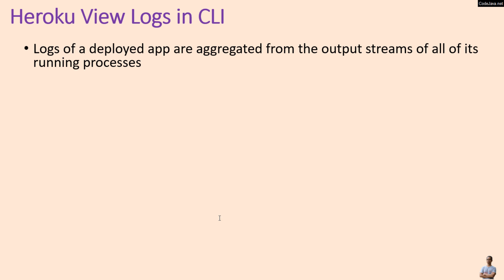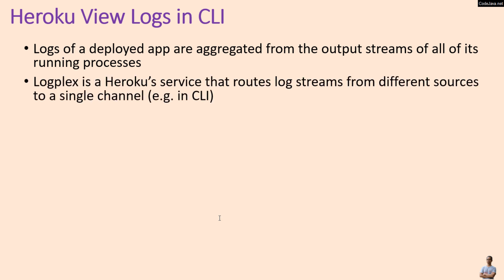Logs of a deployed app are created from the output streams of all of its running processes. Logplex is a Heroku service that routes log streams from different sources to a single channel, such as the Heroku console interface. There are several types of logs.